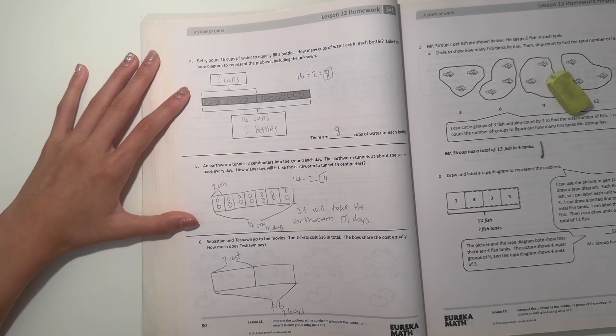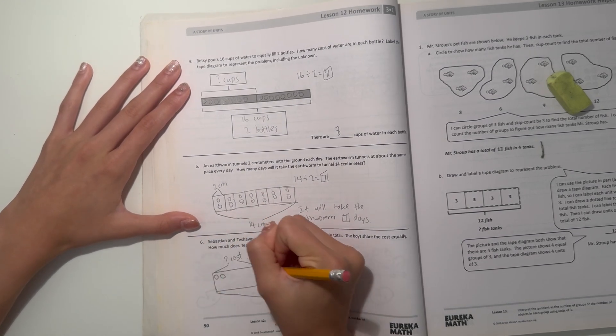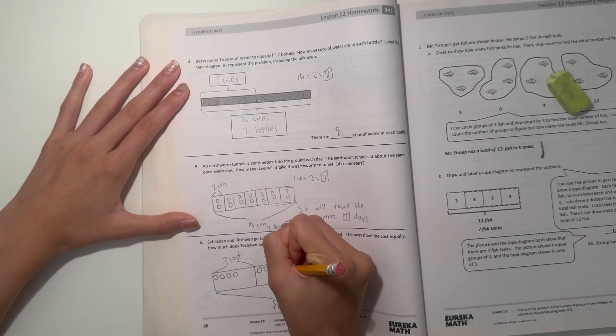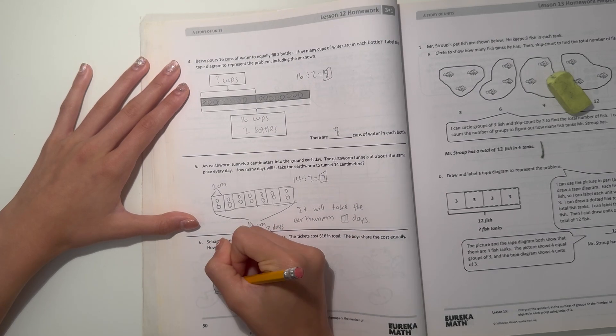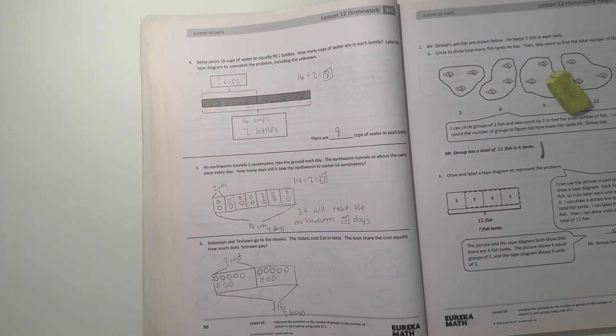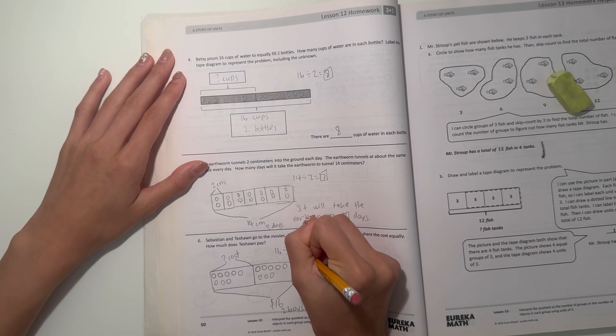So let's keep on drawing dots until we reach 16. So 1, 2, 3, 4, 5, 6, 7, 8, 9, 10, 11, 12, 13, 14, 15, and 16.